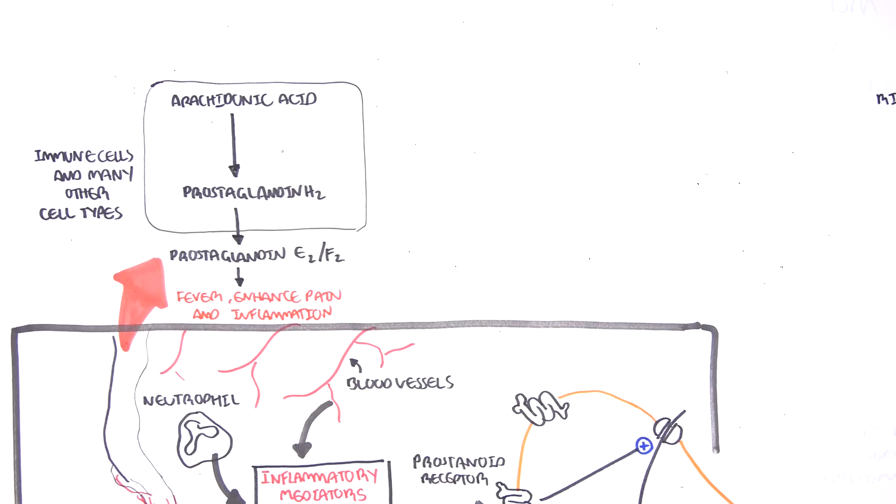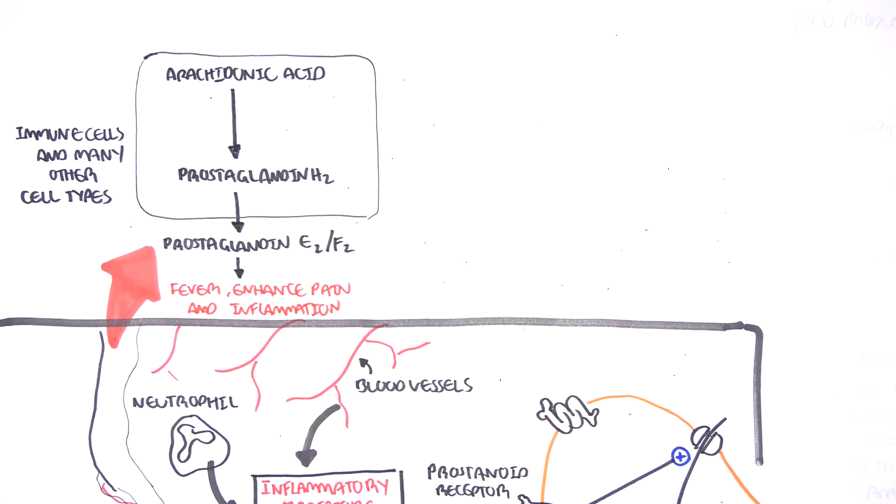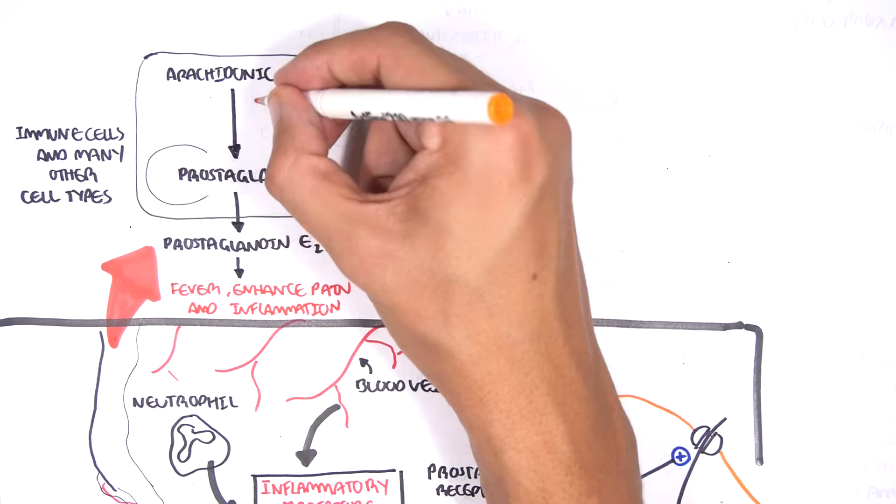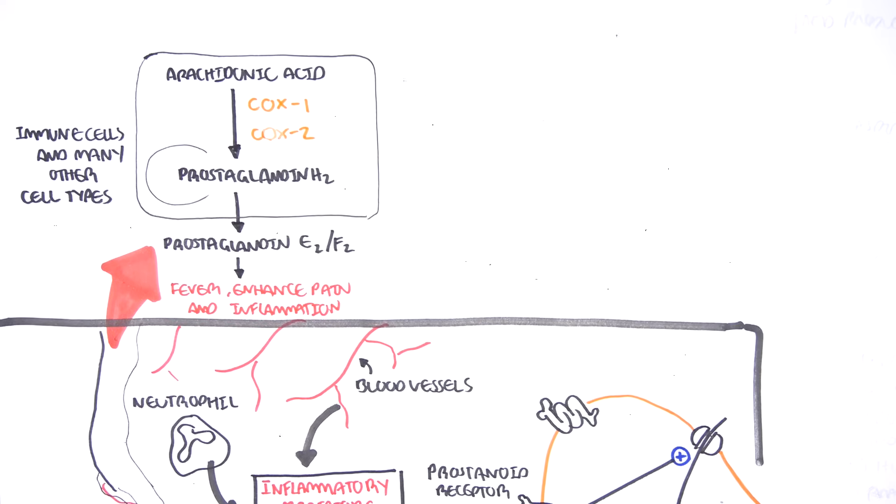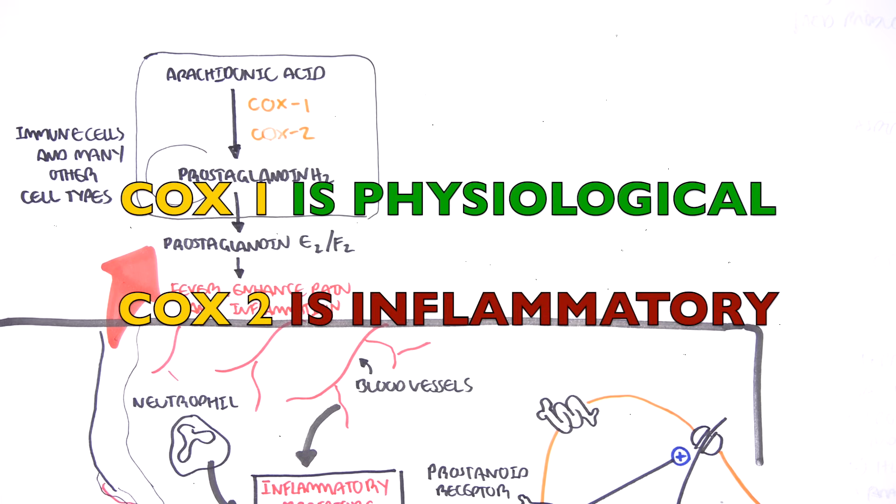The enzymes responsible for the production of these are cyclooxygenase 1, COX1, and cyclooxygenase 2, COX2. Interestingly, COX1 and COX2, despite being of the same name, are very different. COX1 is always active to maintain homeostasis in our body. It's a good guy. COX2 is the one active during injury, stress, and trauma.